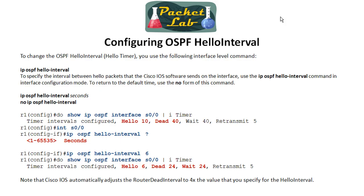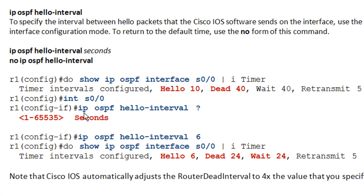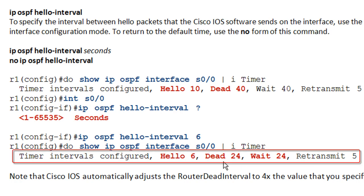Changing the OSPF network type is one way to change the Hello Interval, but a lot of times we want to go in and set our own values. You go under the interface and issue 'ip ospf' — that's the magical keyword to get to the OSPF configuration commands under the interface — and then 'hello-interval'. You can set it anywhere from 1 to 65,000-something seconds. When you set that Hello Interval, Cisco IOS is going to automatically change the dead interval to four times your configured Hello Interval. So we issued 'show ip ospf interface' and you can see our Hello Interval is now six seconds and our dead timer is 24 seconds.